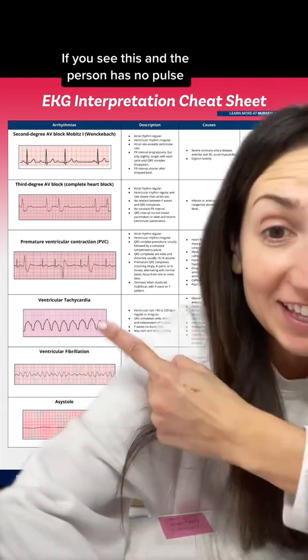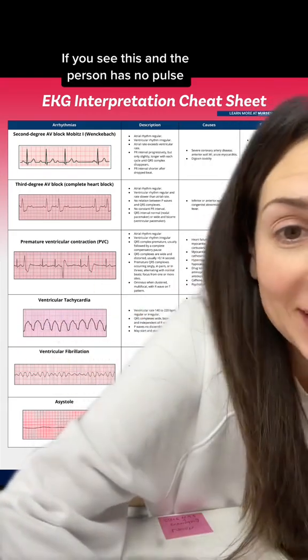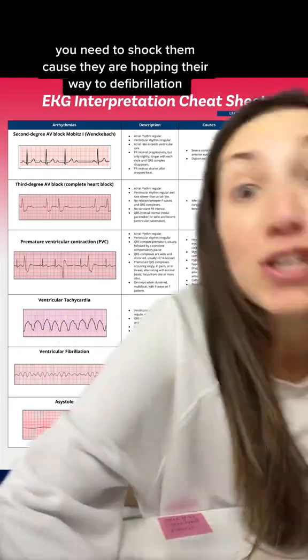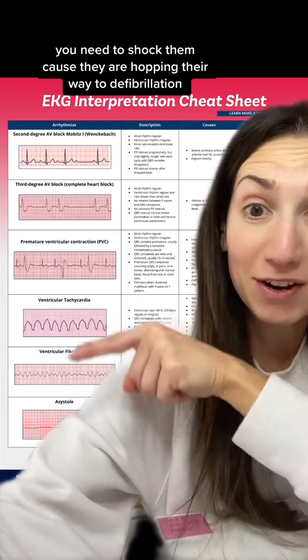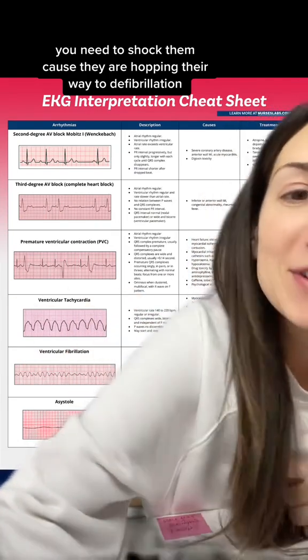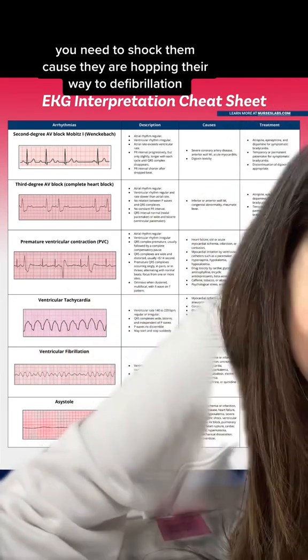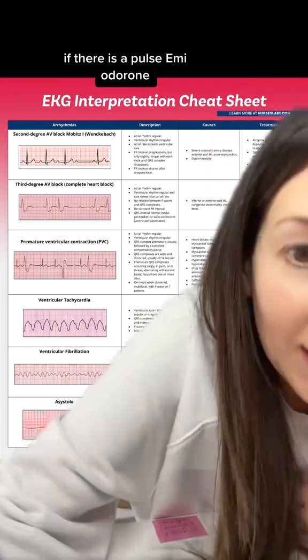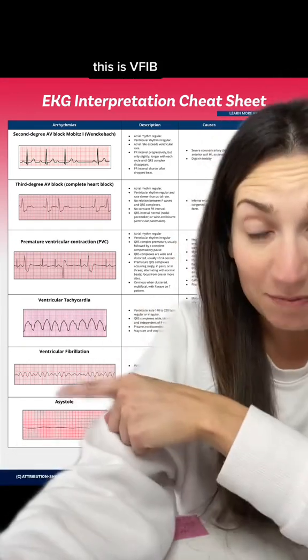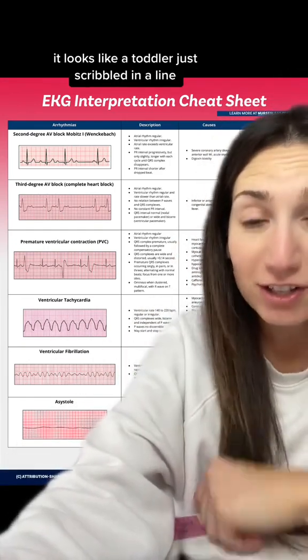Also, the QRS is wide. This is V-tach — usually super fast, like 140 to 220. There is no P wave. If you see this and the person has no pulse, you need to shock them because they are heading toward defibrillation.